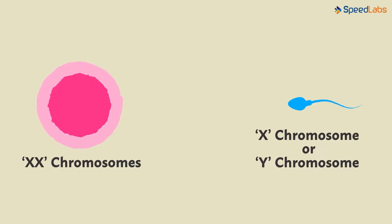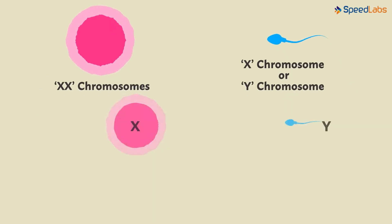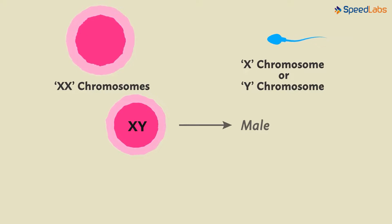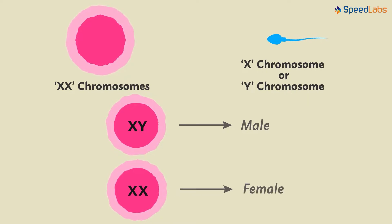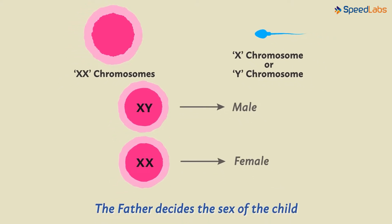Now it depends on which sperm genotype will fertilize the egg cell. If the sperm containing the Y chromosome fertilizes the egg cell, the resulting offspring will be a male — an XY combination. But if the sperm containing an X chromosome fertilizes the egg, it will result in a female child. So who decides the sex of the child? The father, of course. If the father's X chromosome fertilizes the egg cell, then a female offspring; if the father's Y chromosome fertilizes the egg cell, then a male offspring.